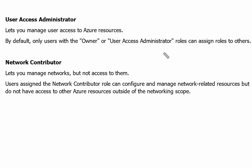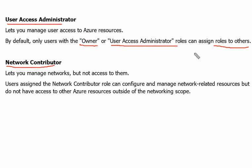Two more roles we are going to discuss are User Access Administrator and Network Contributor, because these are mentioned in the answer options. User Access Administrator can assign roles to other users or members — and the Owner role can also assign roles. Network Contributor can configure and manage network-related resources, but does not have access to other Azure resources that are not network-related.